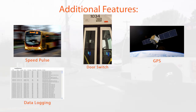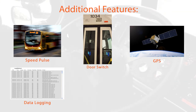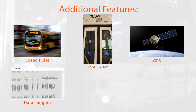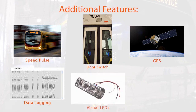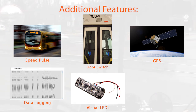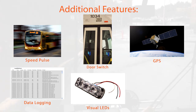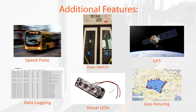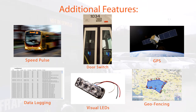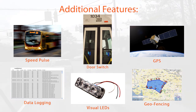Data logging is used to record and store information that can be easily removed for review of activations of the system via a micro SD card installed on the front of the ECU. Visual Alert LEDs can be mounted at the front and/or sides of the bus, triggered by the system when the bus is making a turn. And Geo Fencing can be added to deactivate or lower the volume of the system when in a certain area, such as the bus yard, bus shop, or heavy residential areas.